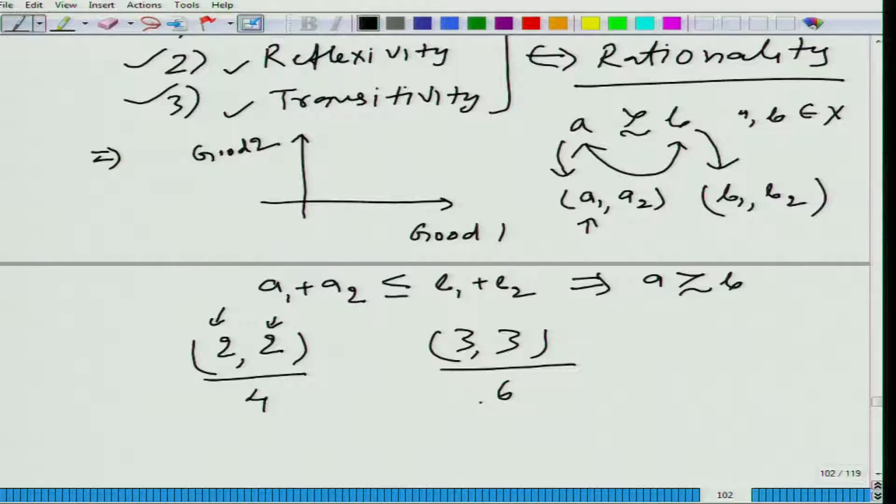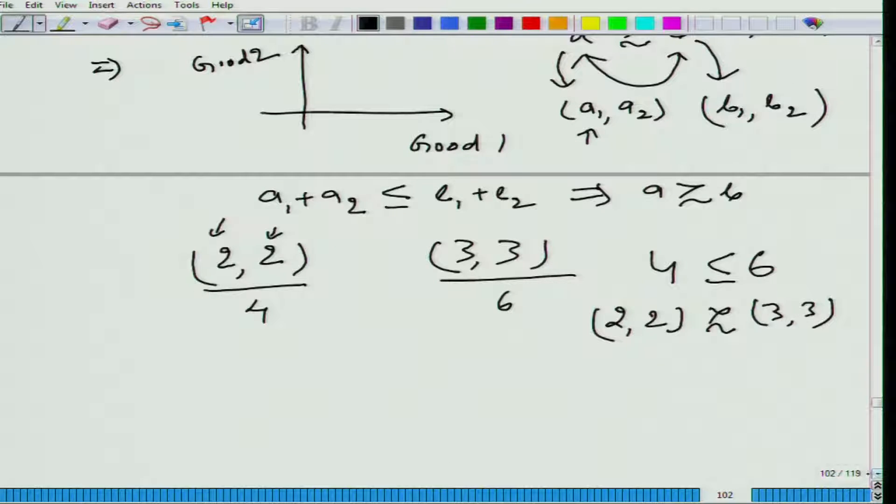He would prefer 2 comma 2. Why? Because what he cares about is not the individual amount of food and cloth - what he cares about is the total sum. Sum here is four and sum here is six, and four is less than six. When four is less than six, I can also write four is less than or equal to six. What it means is that two plus two is at least as preferred as three comma three. Now let us look at it - does it satisfy all the assumptions, the three rationality assumptions that we have described?